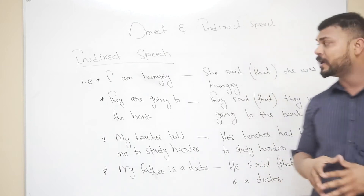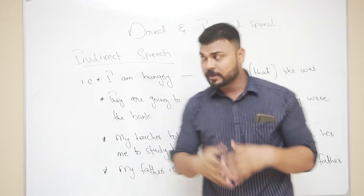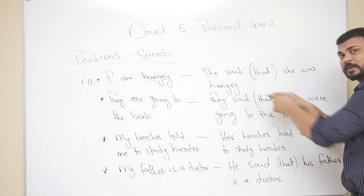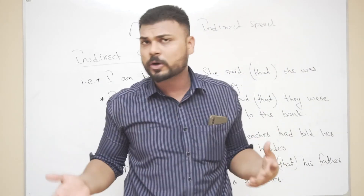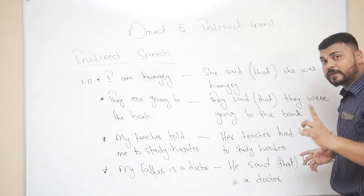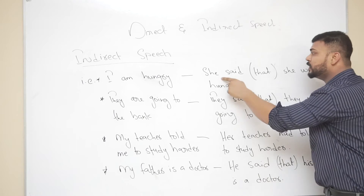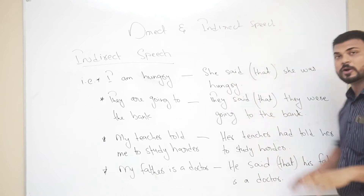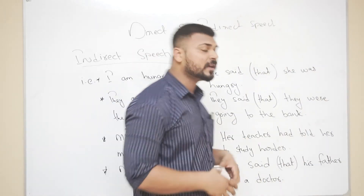The first example is 'I am hungry.' Suppose the speaker is she, a female. So she said (that) she was hungry. The word 'that' is in brackets because it is optional — if you don't want to use it, it's okay, it's not compulsory. Also, you do not use quotation marks in indirect speech. So: she said she was hungry. There are no quotation marks because the verb tense has changed, which already signals it is not direct speech.